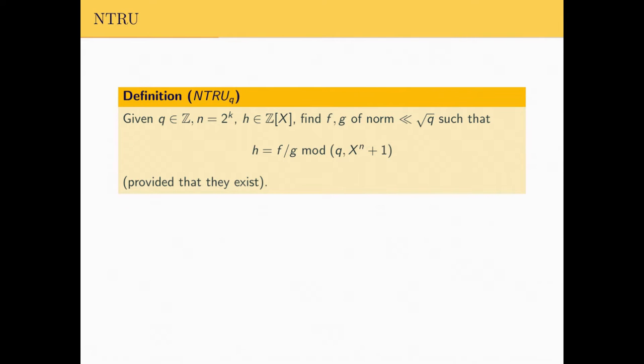The NTRU security assumption asks, given a polynomial h, a modulus q, and a power of 2 n, to find f and g small polynomials verifying that h is equal to f over g modulo q and x to the n plus 1, provided that such small polynomials exist.